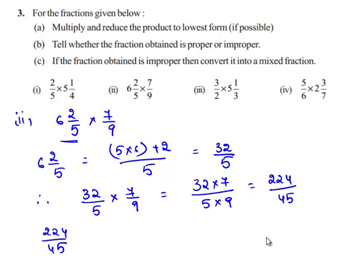Let's divide 224 by 45. Therefore, 45 times 4 gives 180, and the remainder is 44. Therefore, the mixed fraction form of 224/45 is 4 44/45.